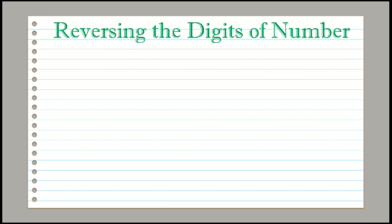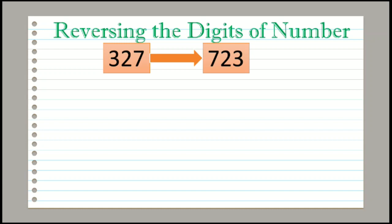Now we will see how to get the reverse number. Suppose 327 is the given number, so the reverse number of 327 is 723. By performing a division operation, we can get the reverse number. After dividing the given number by 10, whatever is the remainder will be the first digit of our reverse number.